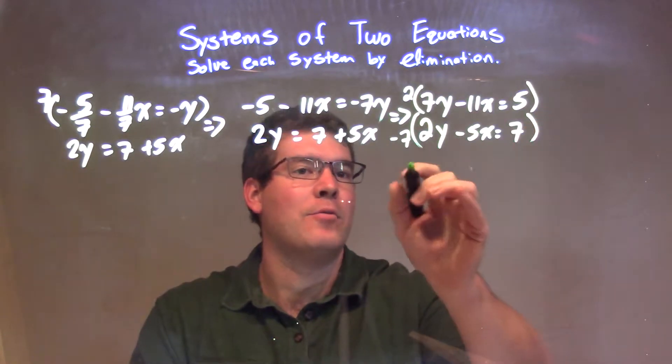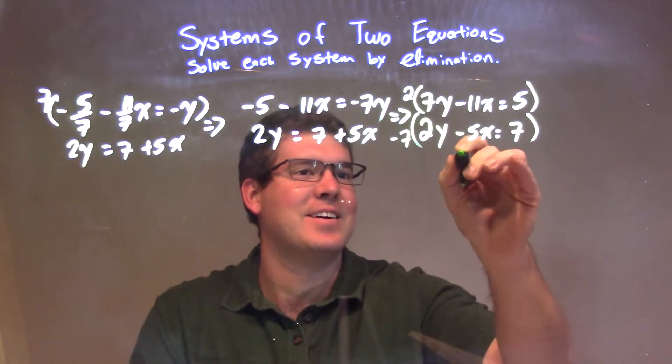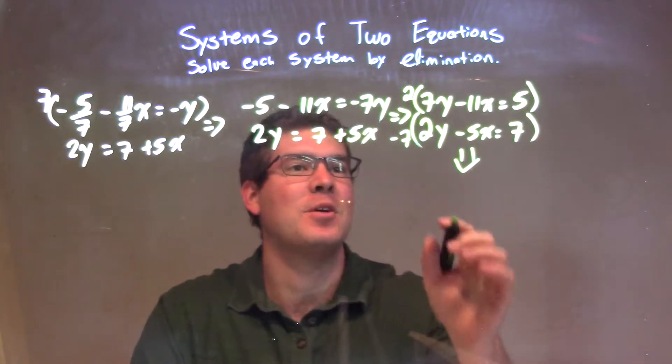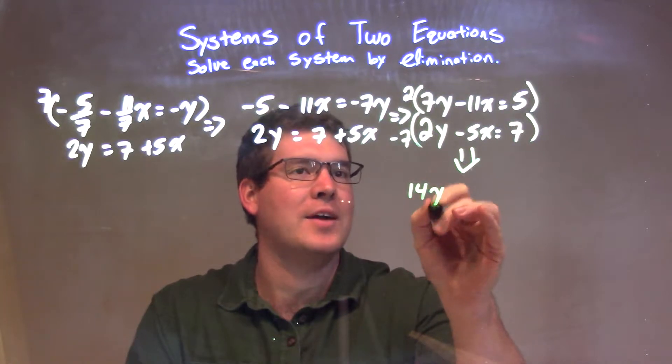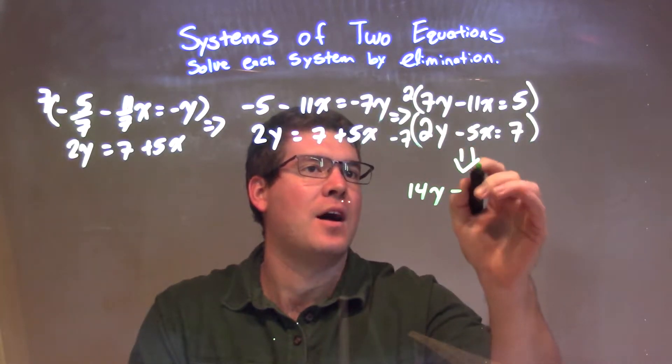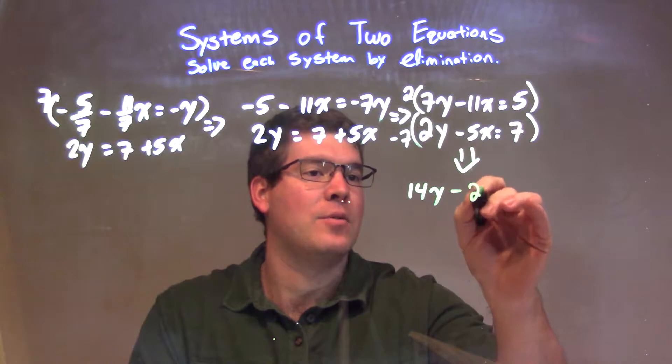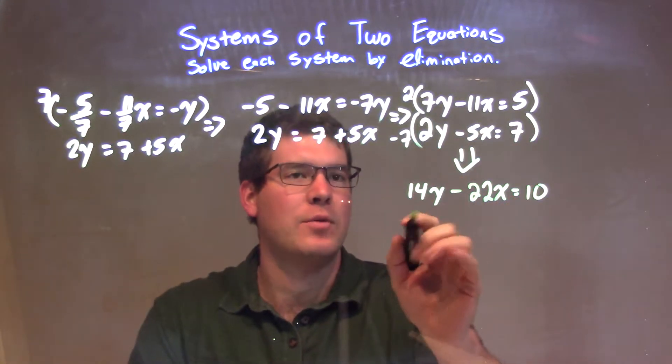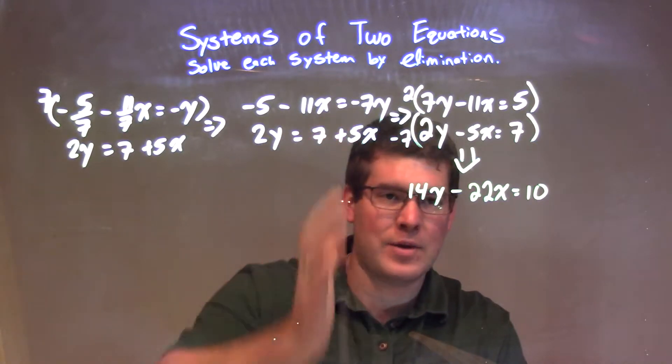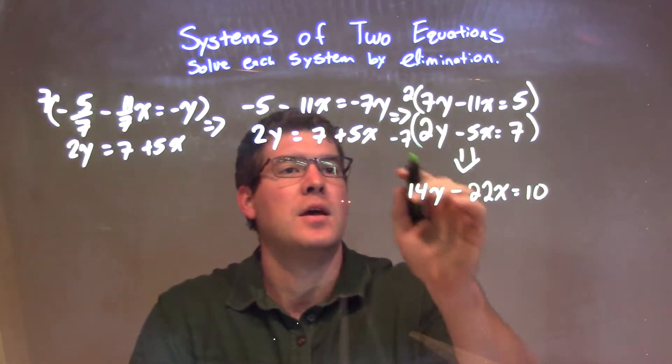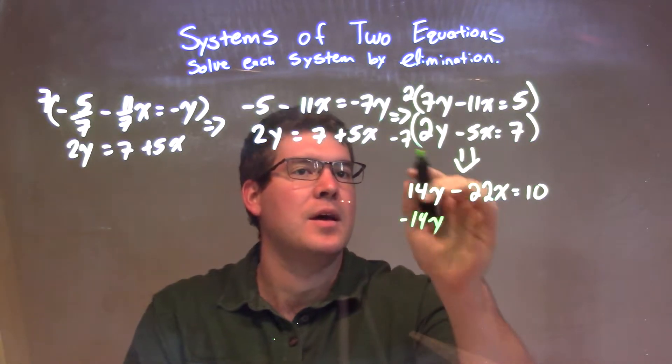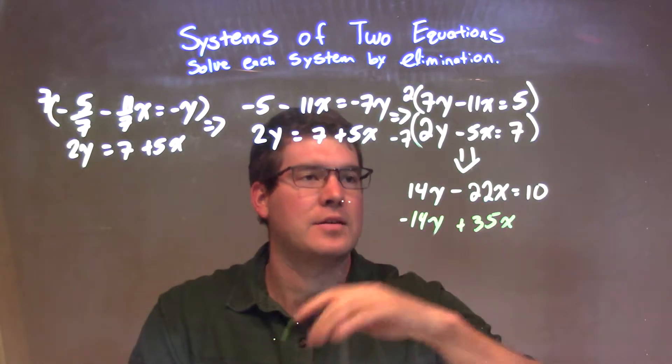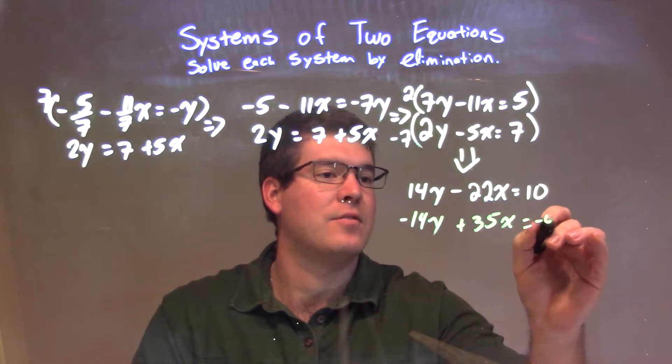In doing that, I'm going to rewrite that. We have 14y minus 22x equals 10. And I chose the second one to be negative because I wanted one to be positive, one to be negative, so I want to add them together and eliminate them. Negative 7 times 2y is negative 14y, and negative 7 times negative 5x is positive 35x. Negative 7 times positive 7 is negative 49.